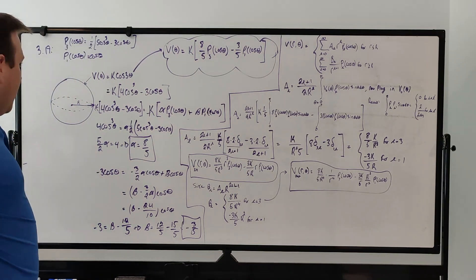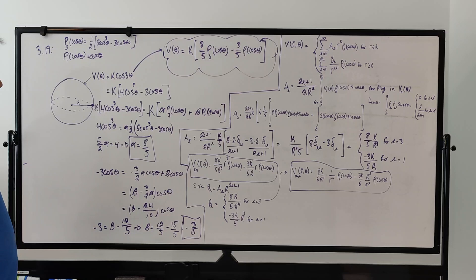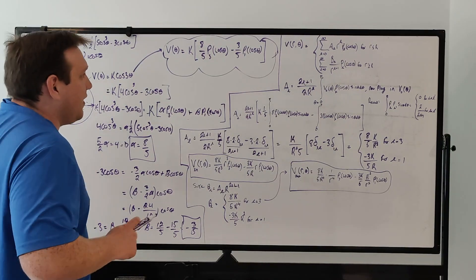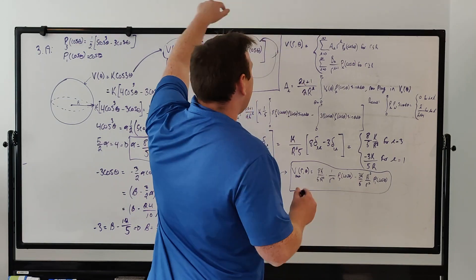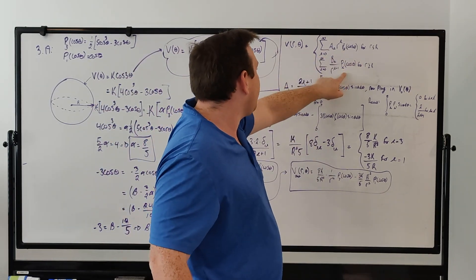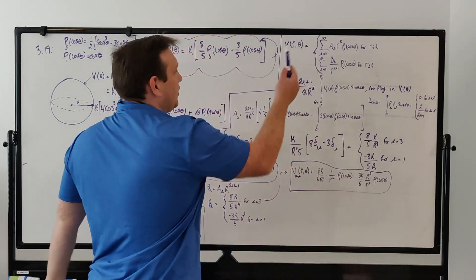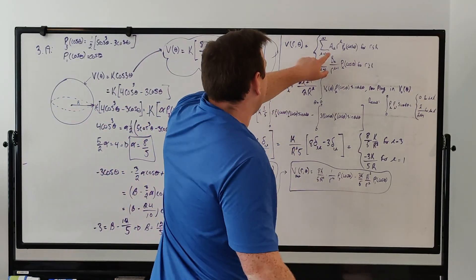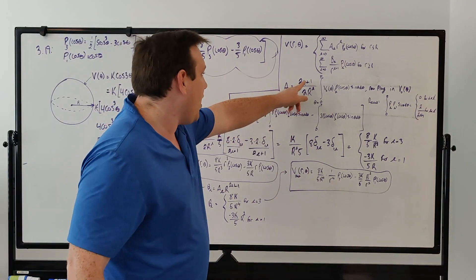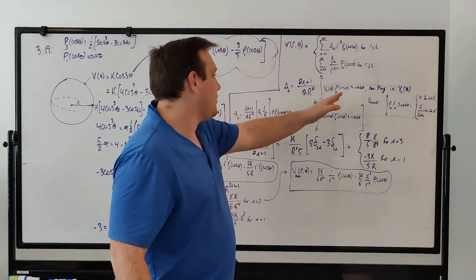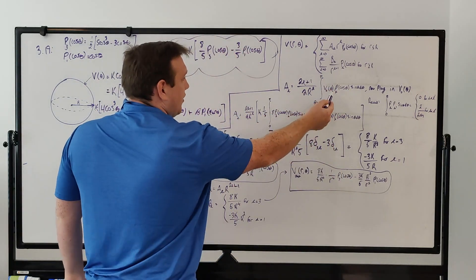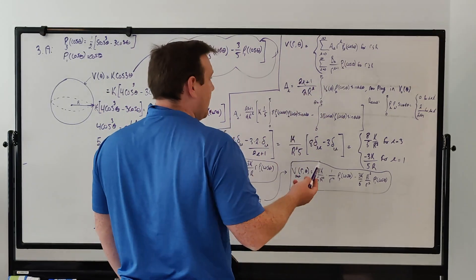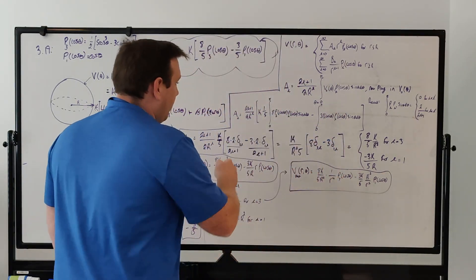That's the first step — expressing the surface potential in Legendre polynomials. Now moving into solving for the potentials inside and outside: the generalized potential inside is given by one summation form, and outside by another. The coefficient a_l is given by (2l+1)/2 times 1/R^l times the integral of V₀(θ)·P_l(cosθ)·sinθ dθ. We just need to plug in our known potential function and solve for the coefficients. Recall that integrating two Legendre polynomials from 0 to π gives 0 if the indices differ, and 2/(2l+1) if they are the same.